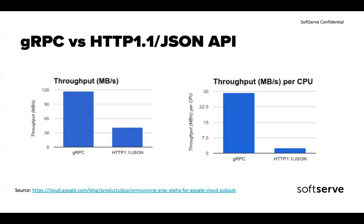There's a nice article about gRPC for Google Cloud Pub/Sub where they compared throughput between gRPC and their old API using HTTP 1.1 and JSON. The throughput improvement is great — almost three times better overall. Throughput per CPU is even better. So gRPC's scalability allows you to efficiently manage your CPU resources.